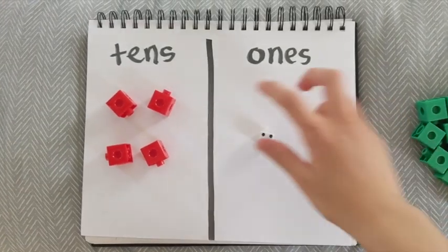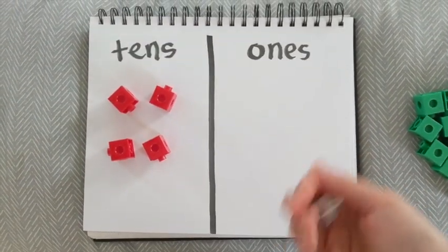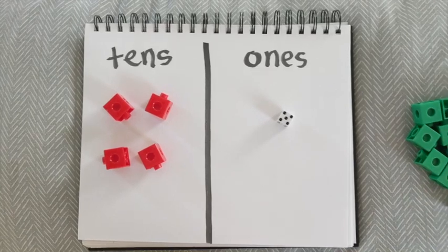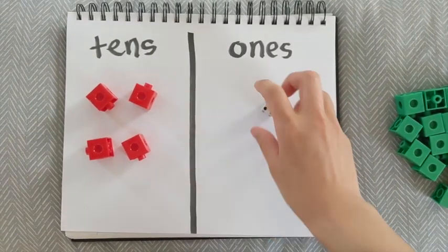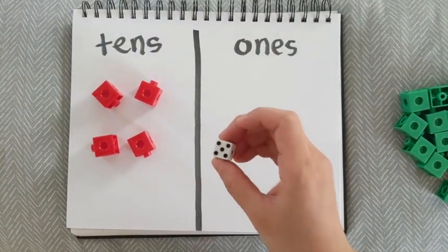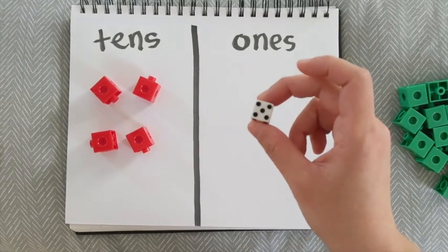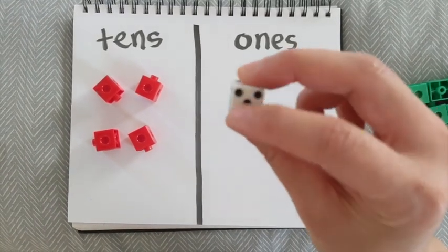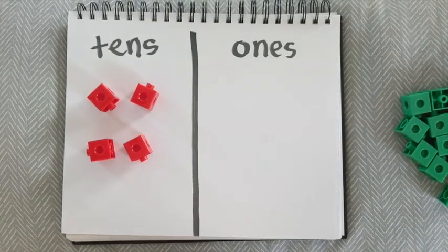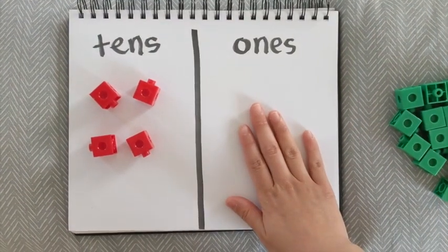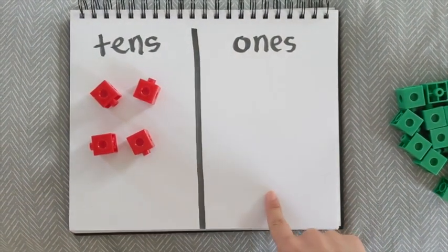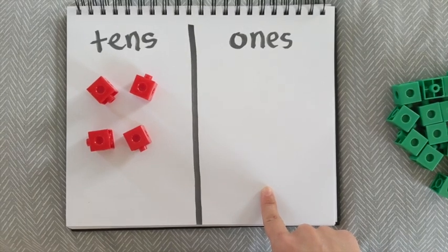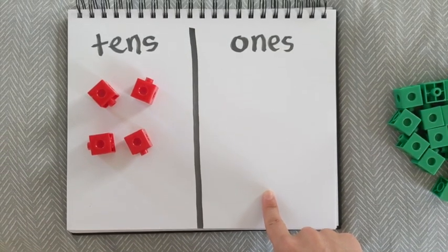So here's how you start the game. One person goes first, you go ahead and roll. And I've got a five. Now I need to take away five ones, because these are not tens here. These are ones. So I can't, because I don't have any ones.